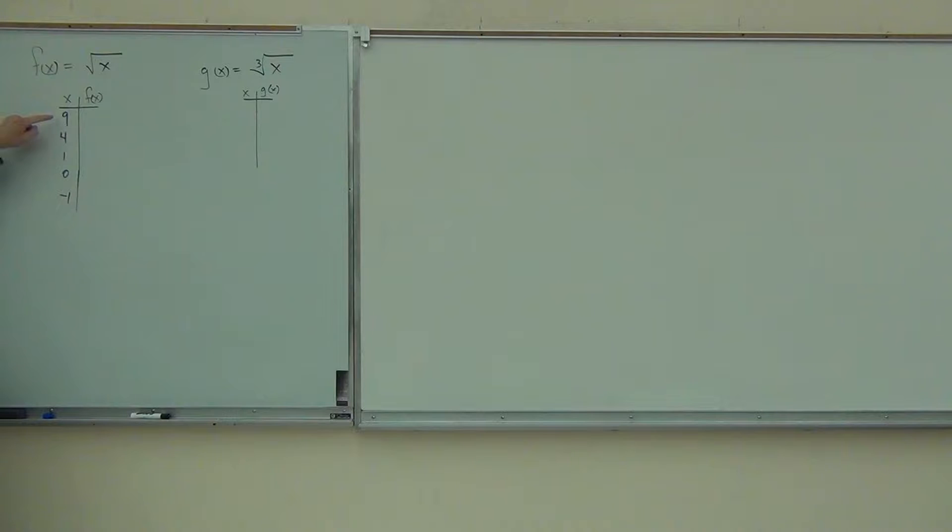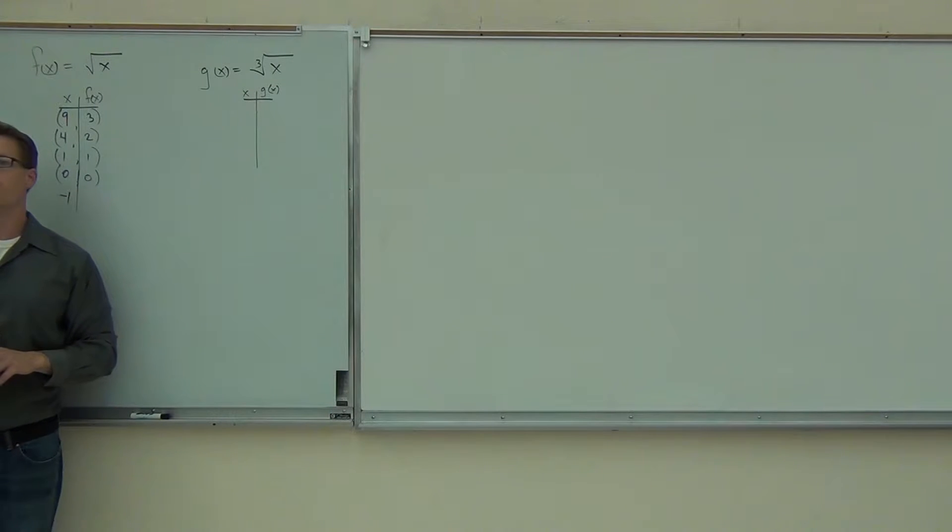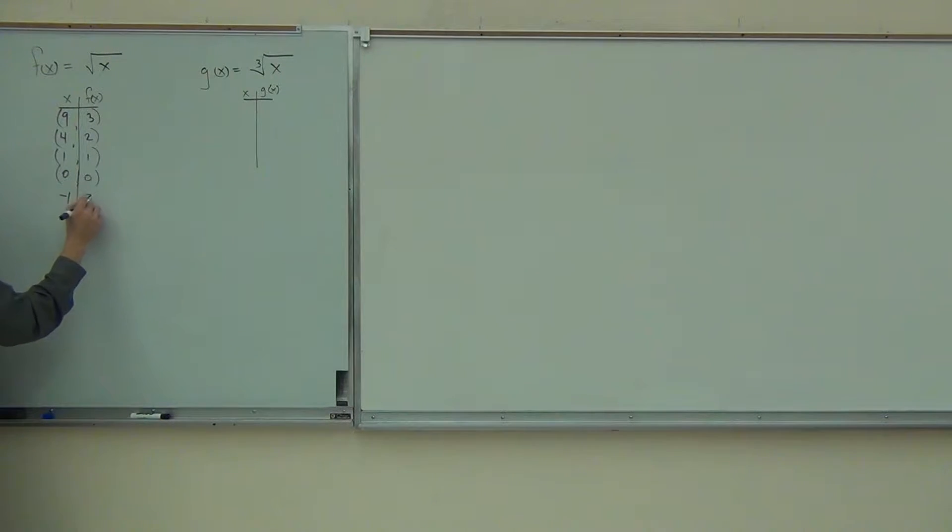We had 9, 4, 1, 0, negative 1. That will be good enough for us. We're taking 9, we're going to plug this in. What's the square root of 9? 3. So that gives me a point 9, 3. Square root of 4? 2. That gives me a point 4, 2. How about the square root of 1? 1. Square root of 0? 0. Good. That is possible. It's 0. Square root of negative 1? That doesn't even happen.